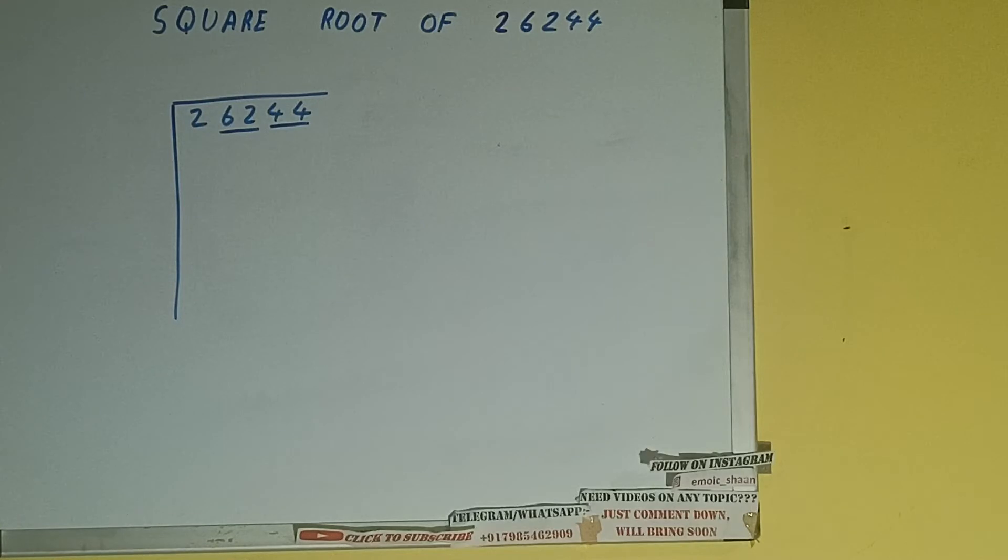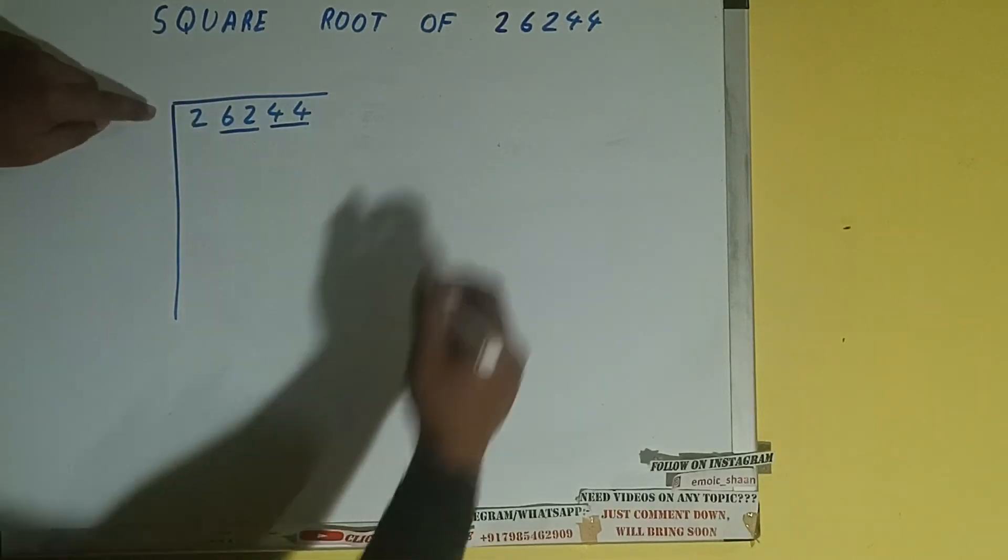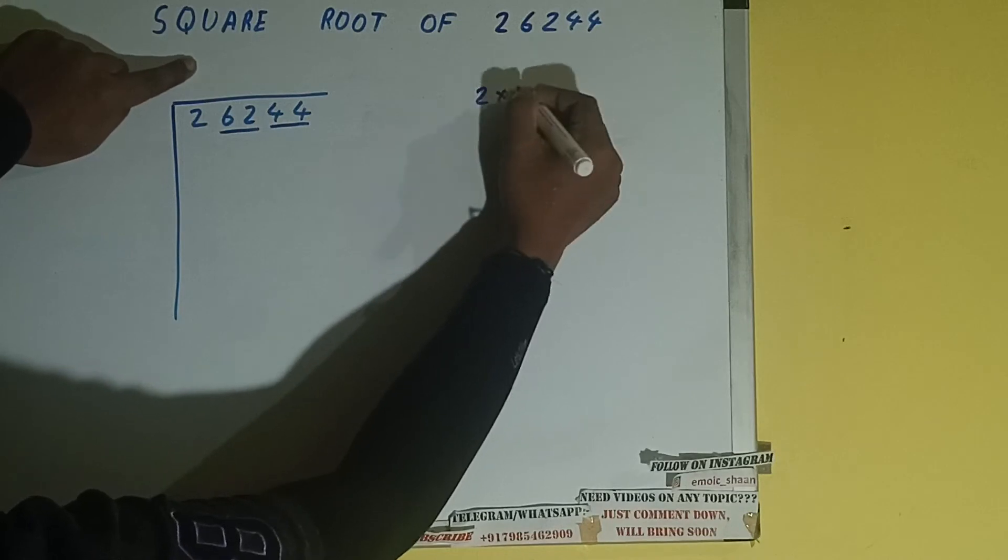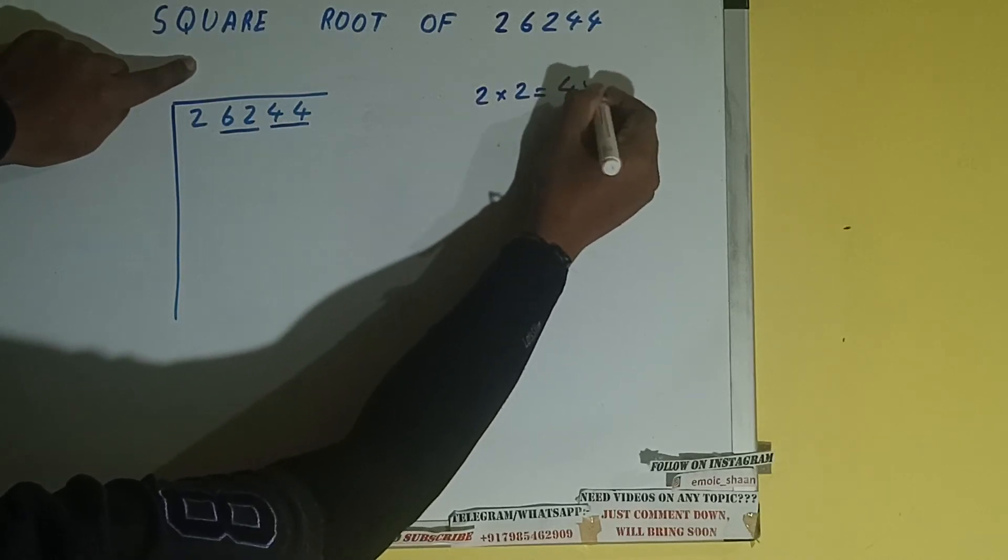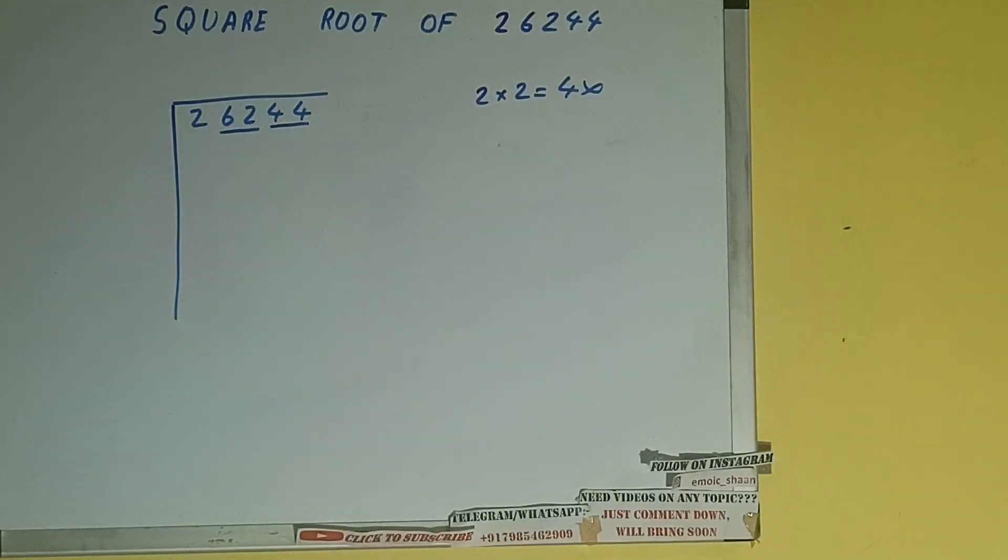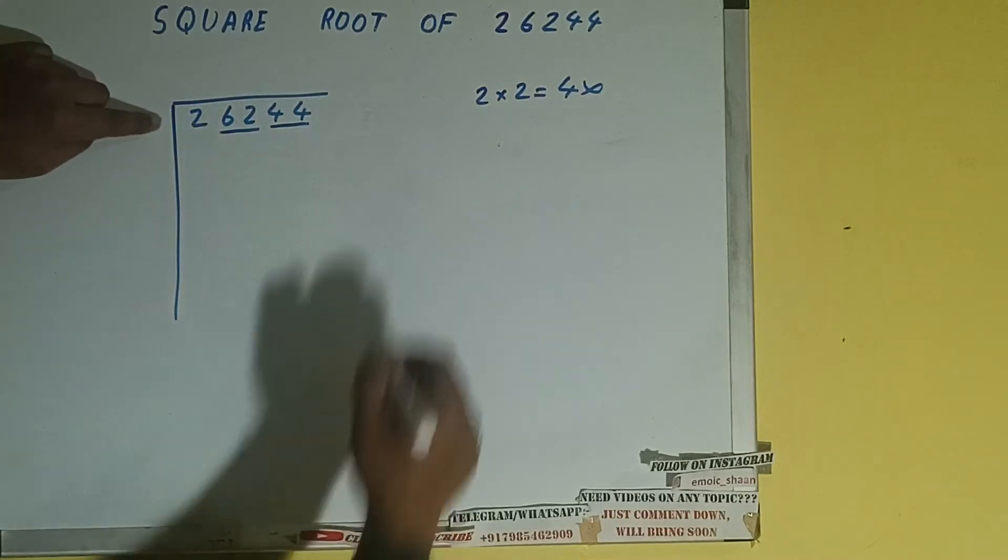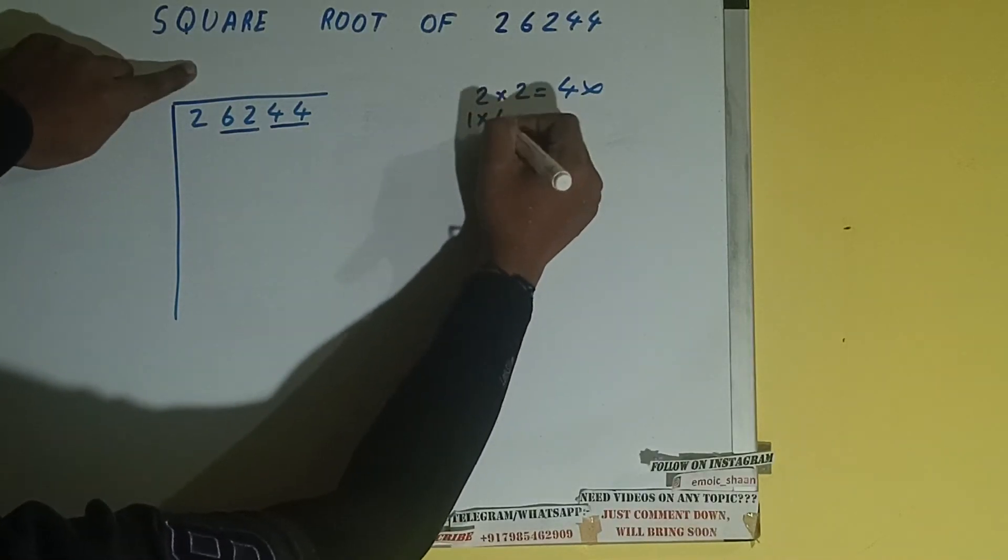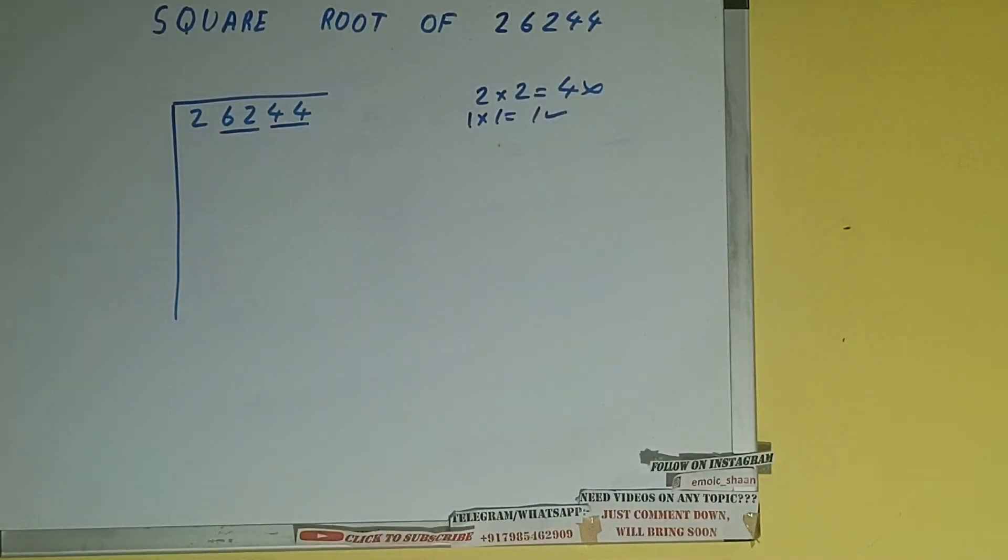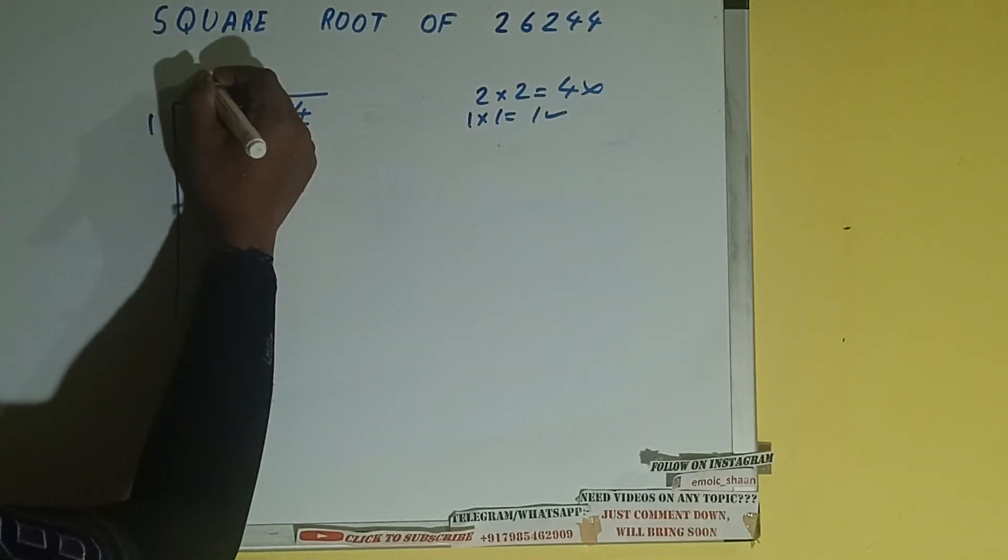The rule is whatever number we write here, we need to write here also. So if we write two here and two here, it will be four, which is greater than two, so we cannot take it. If we write one here and one here, it will be one, which is good to take.